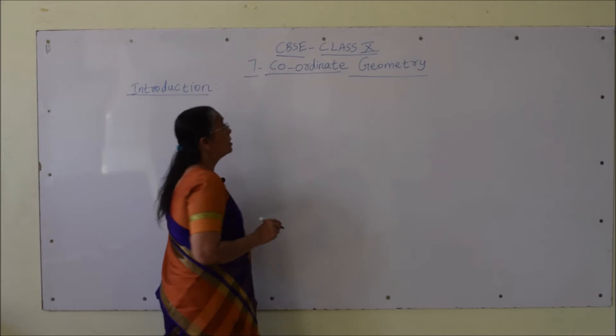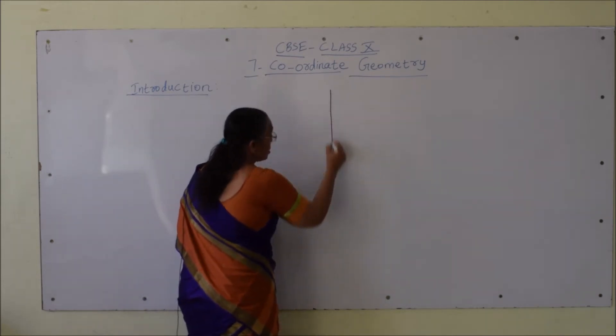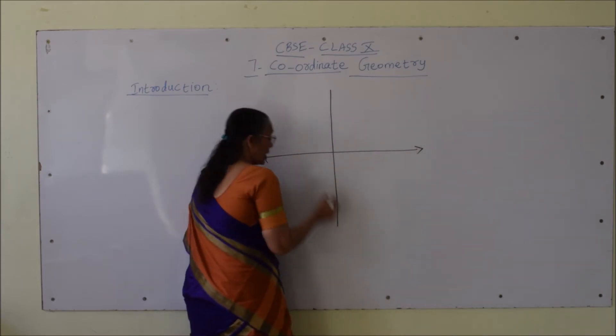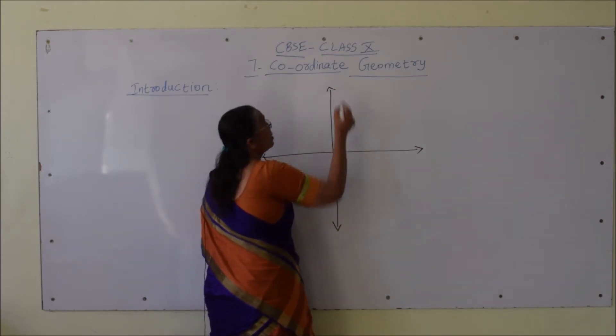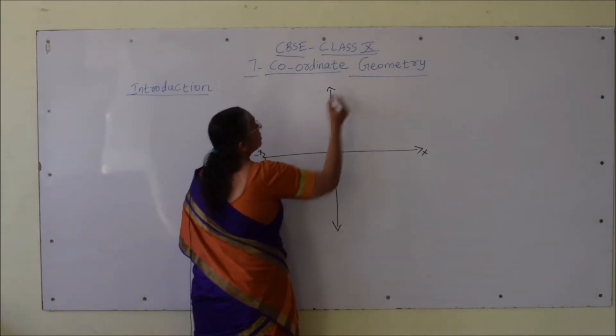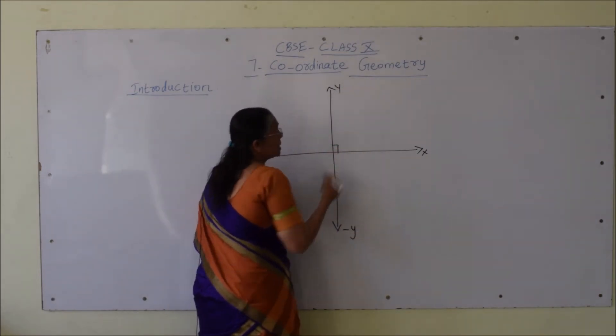In a plane, a rectangular Cartesian system consists of two axes: one is called the x-axis, another the y-axis. The horizontal line is the x-axis and the vertical line is the y-axis, and these two lines are perpendicular to each other.